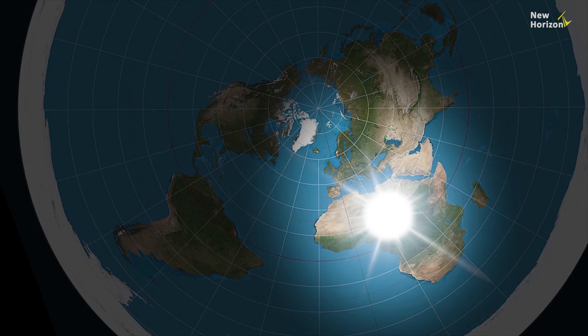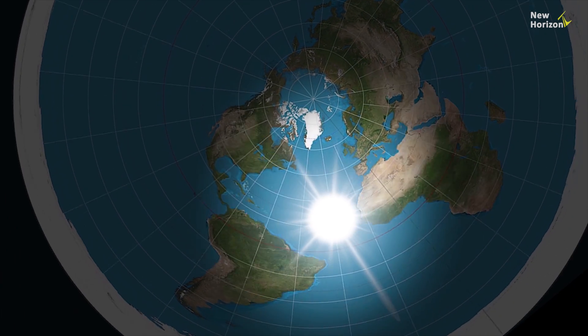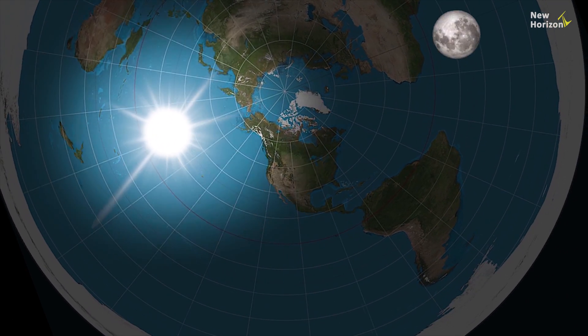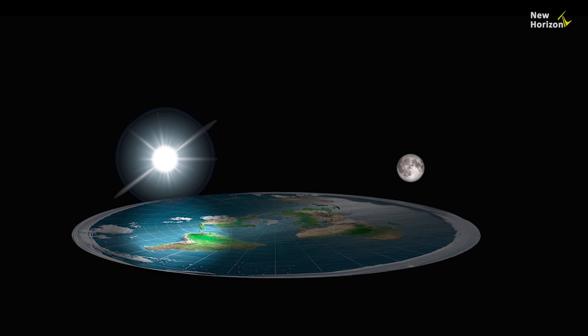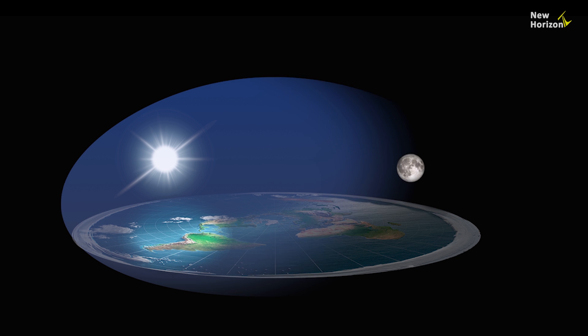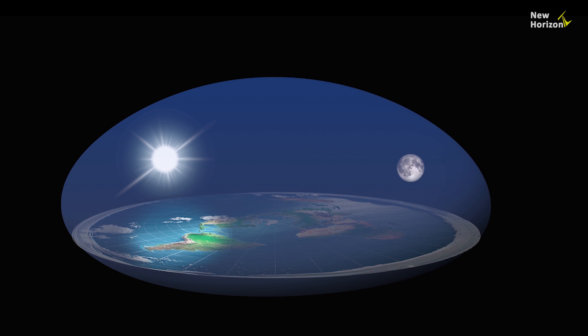The Earth's surface limits the sunlight to a point, but what about the dome over the Earth? According to the flat earth model, there is no obstacle between the Earth's dome and the Earth's surface, meaning the Sun is always visible to the dome.